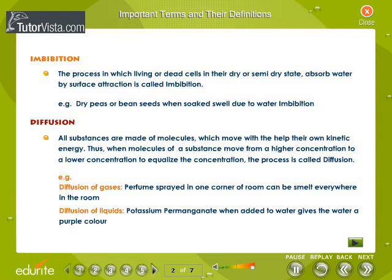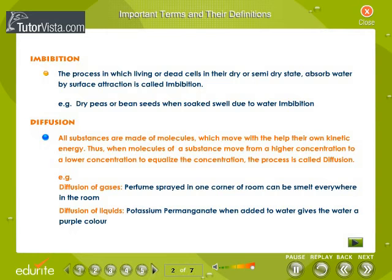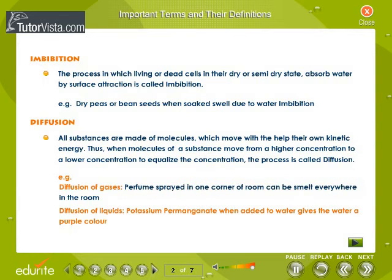Diffusion: All substances are made of molecules, which move with the help of their own kinetic energy. When molecules of a substance move from a higher concentration to a lower concentration to equalize the concentration, the process is called diffusion. For example, perfume sprayed in one corner of a room can be smelt everywhere in the room. Potassium permanganate, when added to water, gives the water a purple color.